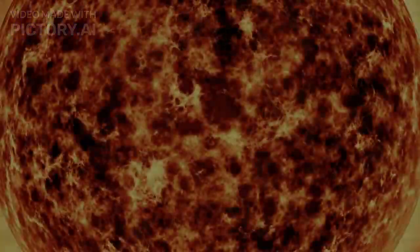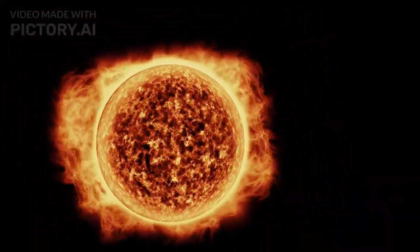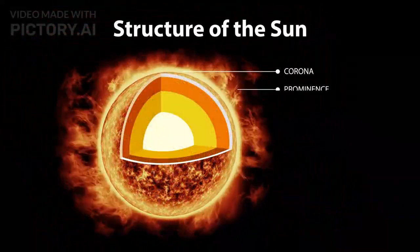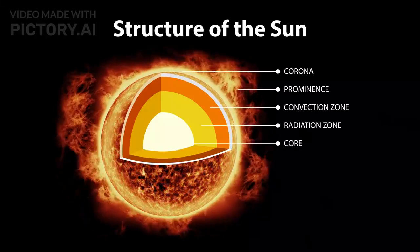The solar dynamo mechanism operates primarily in the convective zone and the tachycline, a thin layer between the radiative and convective zones. The tachycline is crucial because it's where the Sun's differential rotation and shear flows play a significant role in generating the magnetic field.